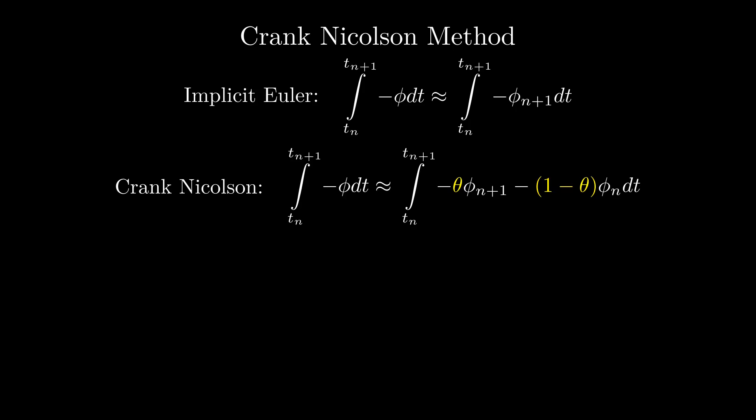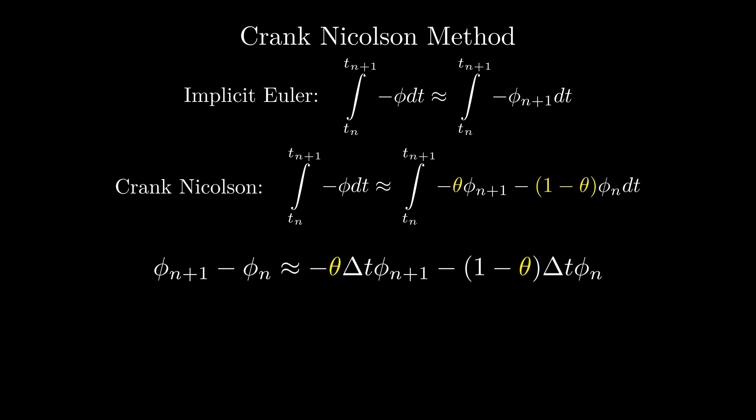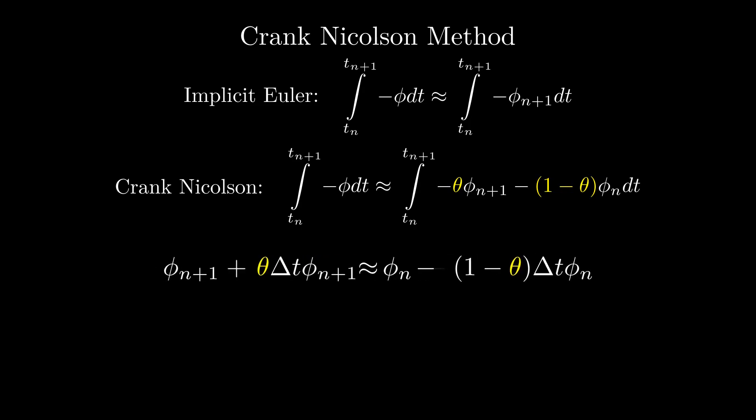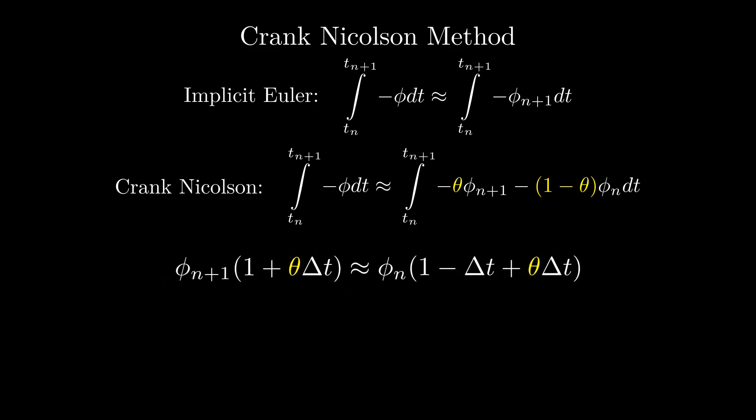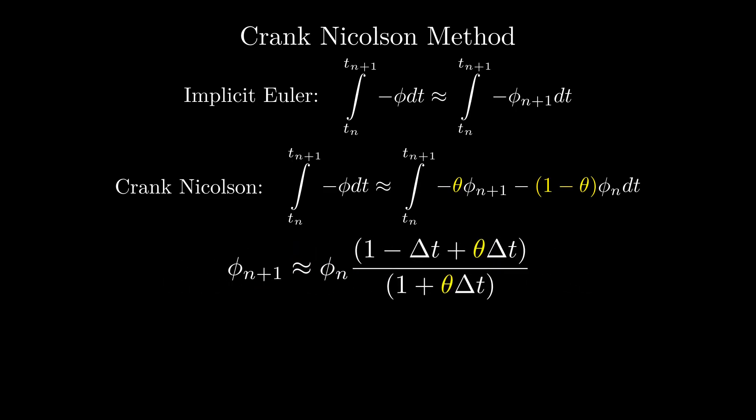This method is called the Crank-Nicholson method. We do the same integration steps as before, move all phi_n+1 terms to one side, factorize, and get an equation. Notice that when we plug in theta equals 0, we get exactly the same equation as with explicit Euler. And at theta equals 1, we get the same equation as with implicit Euler. At theta equals 0.5, the method is called pure Crank-Nicholson.